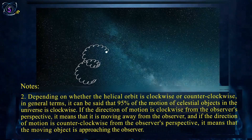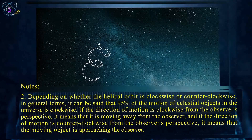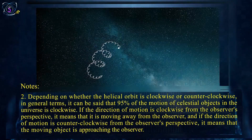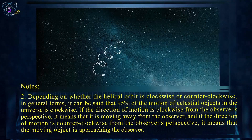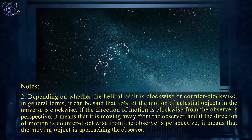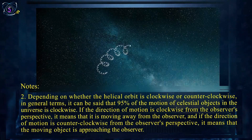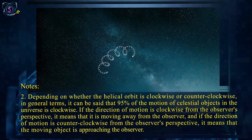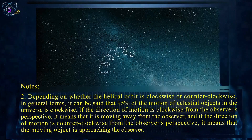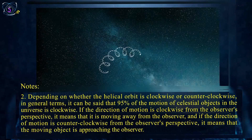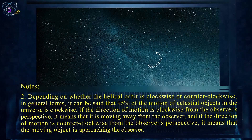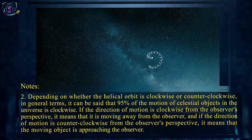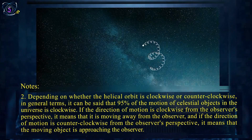Note 2: Depending on whether the helical orbit is clockwise or counterclockwise, in general terms, 95% of the motion of celestial objects in the universe is clockwise. If the direction of motion is clockwise from the observer's perspective, it means the object is moving away from the observer. If the direction is counterclockwise, the object is approaching the observer.